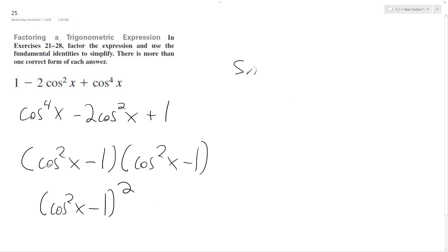And a trig identity here, so sine squared x plus cosine squared x equals one. So cosine squared x is equal to one minus sine squared x. So we can rewrite this as one minus sine squared x minus one squared.